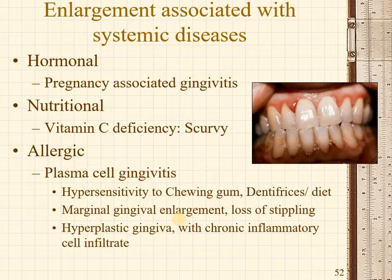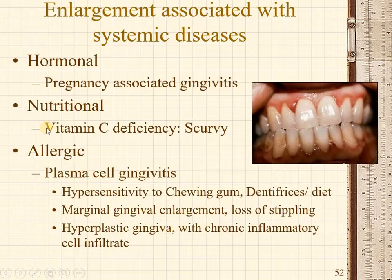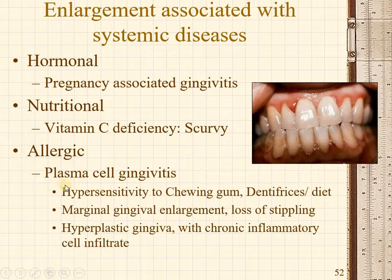There are many systemic conditions where you will see gingival enlargement. One of the most common is pregnancy-associated gingivitis. A lobular hemangioma is a variant of pyogenic granuloma. As seen in this picture, large blood vessels are dilated and engorged, associated with the hormonal changes of pregnancy. It is also called pregnancy epulis. Nutritional deficiencies like vitamin C deficiency, also known as scurvy, are known to cause gingival enlargement. Allergic responses due to changes in toothpaste, dietary changes, or chewing gums lead to excessive accumulation of plasma cells.